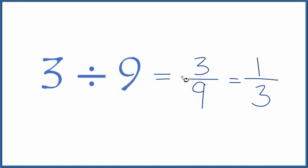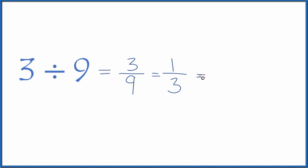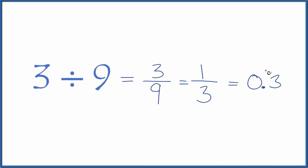So 3 divided by 9 equals either the fraction 3 ninths or 1 third. And if you type this in your calculator, you divide 3 by 9 or 1 by 3, you get 0.3333. The 3s, they keep repeating. So let's get rid of this and then put a bar over the 3, show that that repeats.